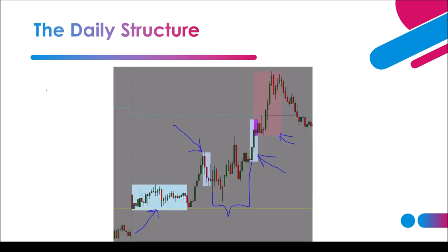Here's the daily structure we'll be following. We have the Asian session, which offers a ranging period or accumulation phase. From that Asian session, we have a gray area which is a session changeover period from the Asian side to the London side. That colorless area is where the London session actually occurs. Then another gray area marks the session changeover from London to the US session.